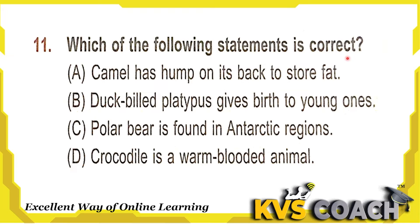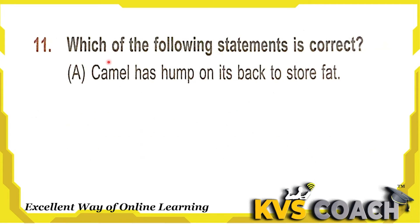Question 11: which of the following statements is correct? Option A — camel has a hump on its back to store fat — yes, this is correct. Option B — duck-billed platypus gives birth to young ones — no, it lays eggs. Option C — polar bear is found in Antarctic regions — no, it is found in Arctic regions. Option D — crocodile is a warm-blooded animal — no, it is a cold-blooded animal. So the right statement is option A.